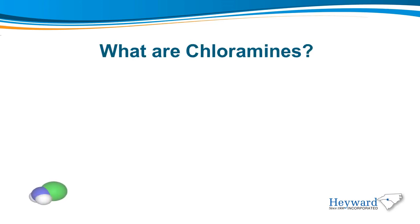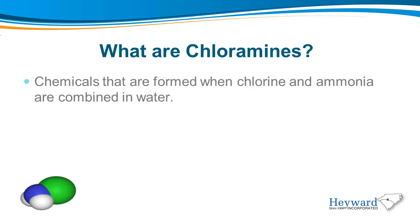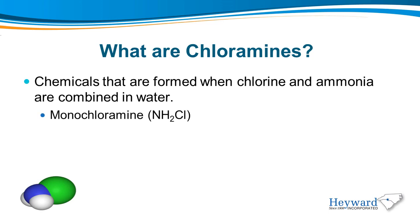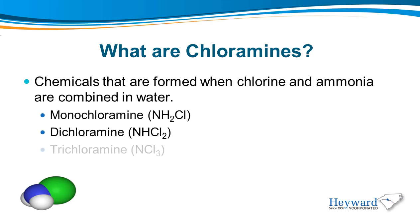What are chloramines? Chloramines are chemicals that are formed when chlorine and ammonia are combined in water. Three forms are monochloramine, dichloramine, and trichloramine.